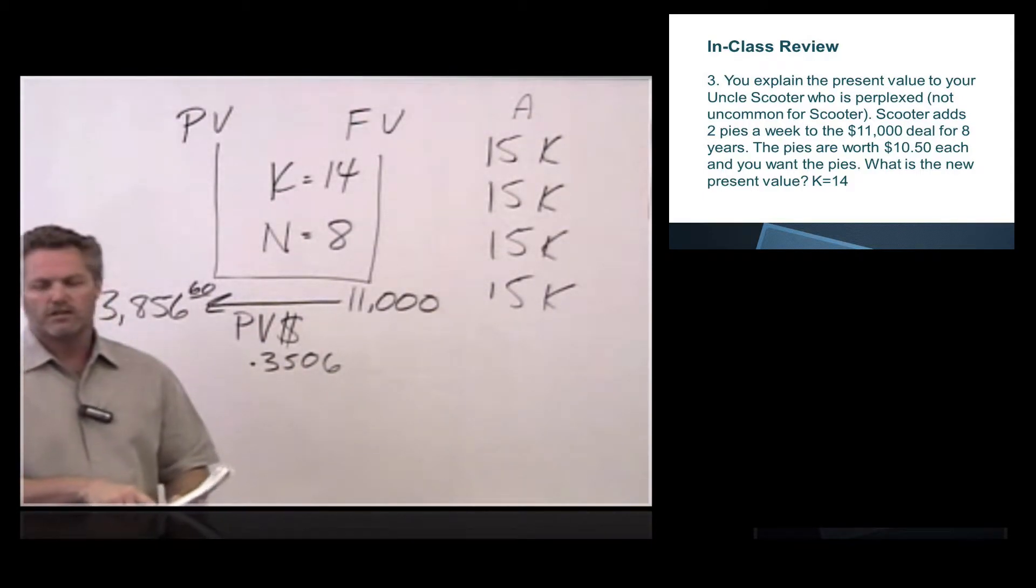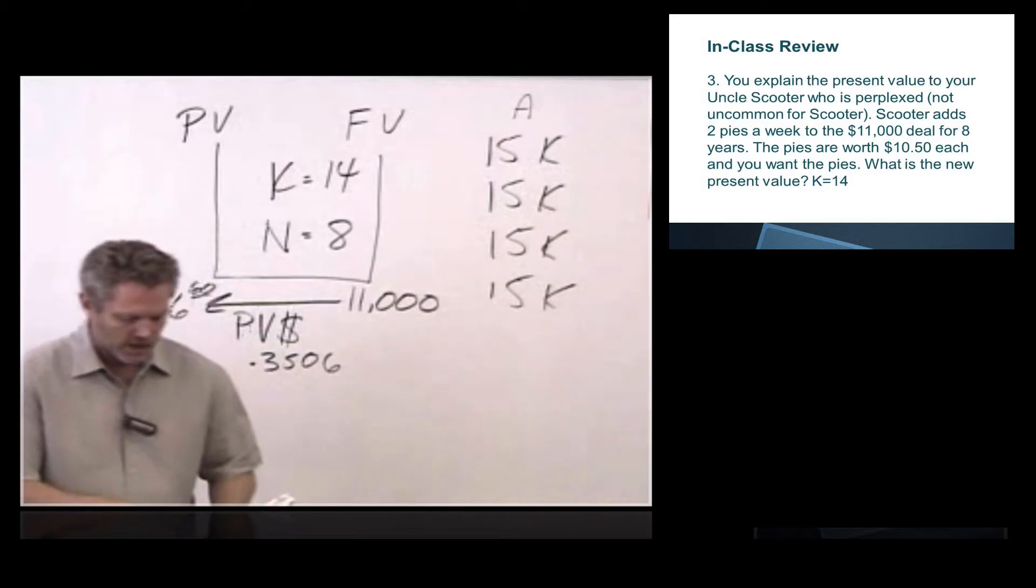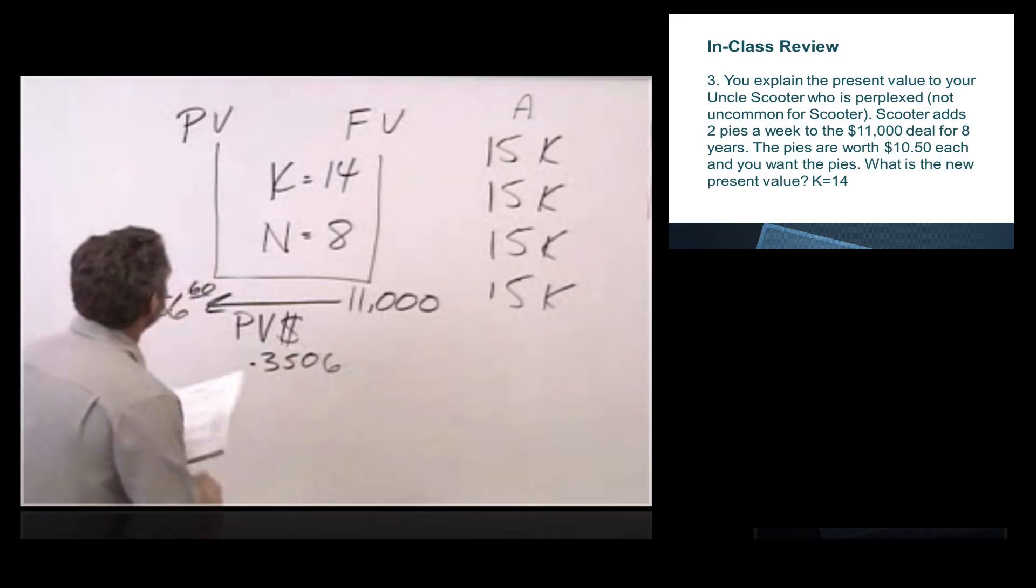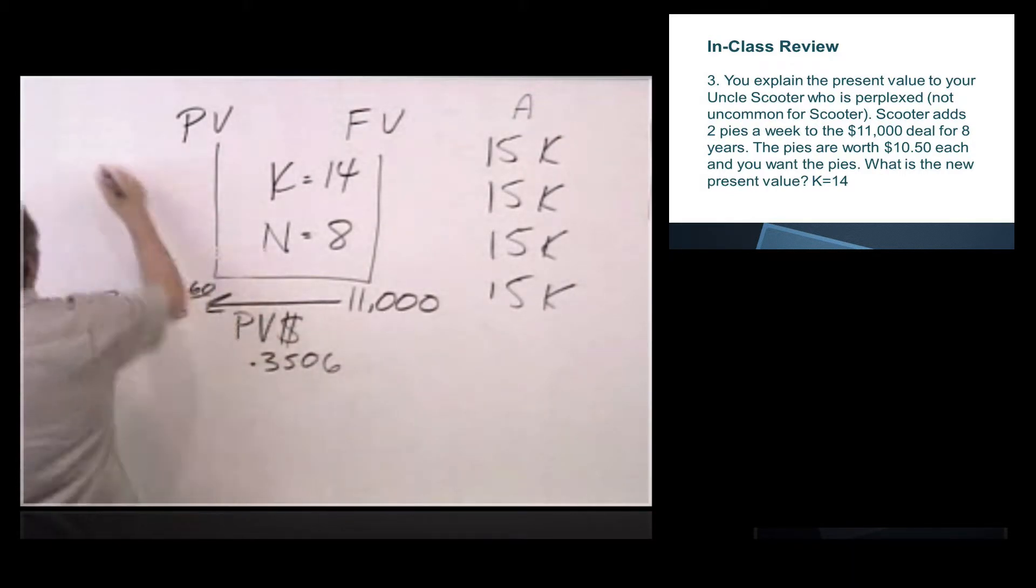And so here in question three, it says clearly the pies are worth $10.50 each, and you want the pies. If this was 27 tons of manure, you probably wouldn't want it, unless you're a farmer, and then you really would want it, because you could use it and it has value. We also, if you note here, the pies are worth $10.50. We don't care necessarily what the sales price is. If Uncle Scooter sells these pies for $15 each, you don't think they're worth $15. You don't use $15. All right, so how are we going to do this?